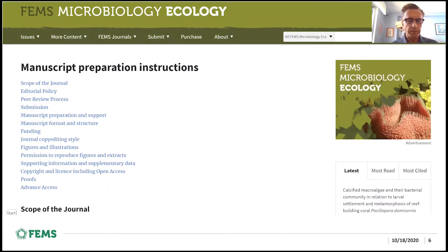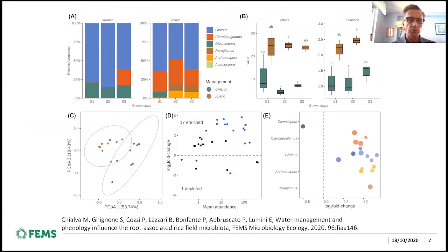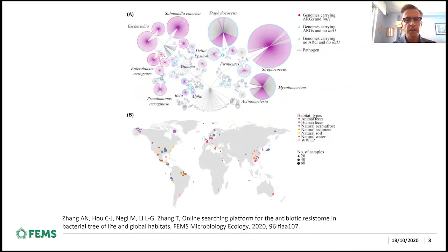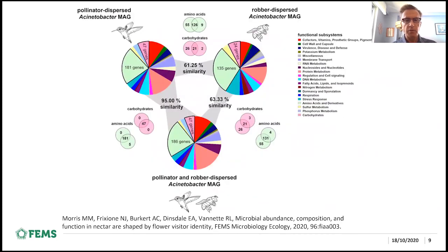As you start preparing your paper, read the manuscript instructions: what's the scope of the journal, the editorial process, the peer review process, and how to submit. And examine how to present your figures — these are really the core of your article. How do you get clarity in the data you're showing? Here are just some examples from recent papers in FEMS Microbiology Ecology. The figures need to be clear and visually attractive. You want the reader to focus in on your data.